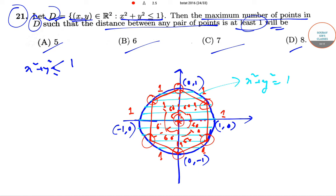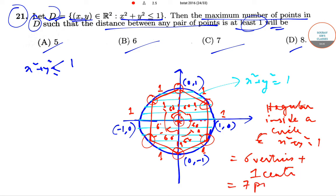So the maximum number of points that can be possible is seven. So basically there are six vertices of a regular hexagon inside a circle x² + y² = 1, so six vertices plus one center equals seven points, which is nothing but option C.